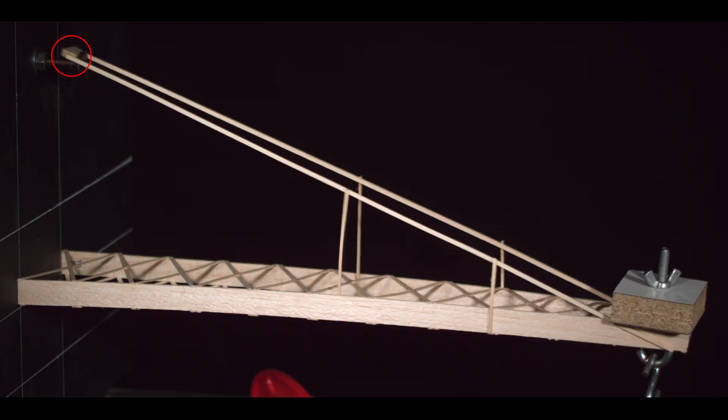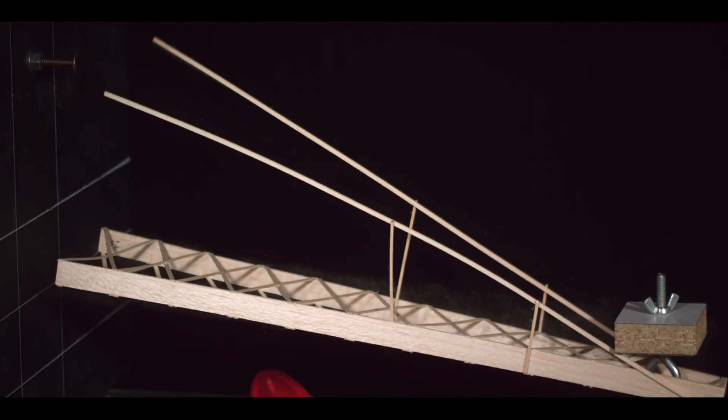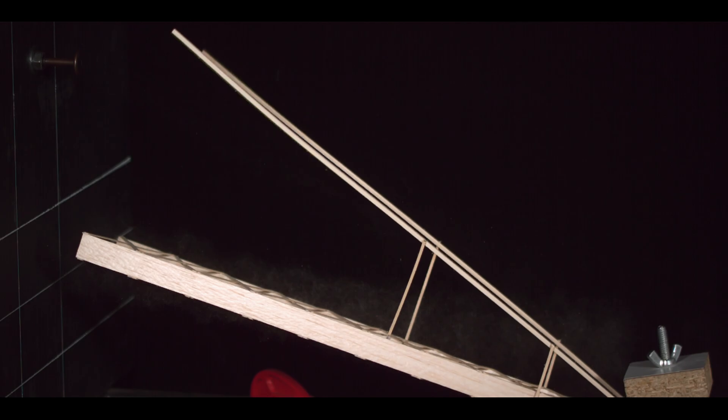It's easy to tell the first failure mode here is the tension stick shearing away from the wall joint. It looks like my choice of using two 3/16th inch sticks for the joint were not quite enough, so for the next build I'll make that a bit longer.